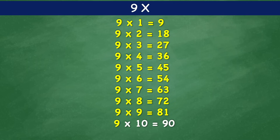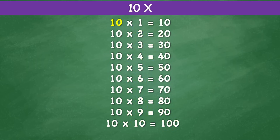9 times 10 equals 90. 10 times 1 equals 10. 10 times 2 equals 20. 10 times 3 equals 30. 10 times 4 equals 40. 10 times 5 equals 50. 10 times 6 equals 60. 10 times 7 equals 70. 10 times 8 equals 80. 10 times 9 equals 90. 10 times 10 equals 100.